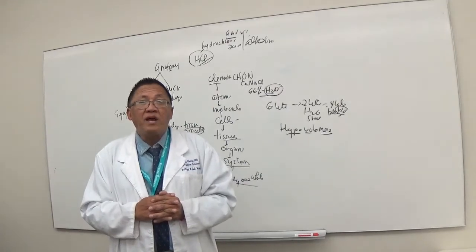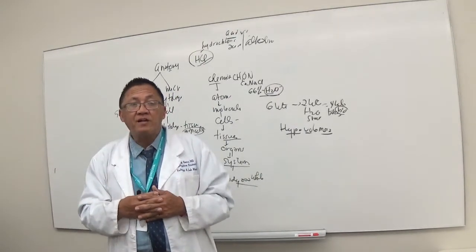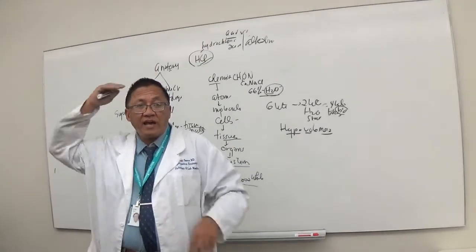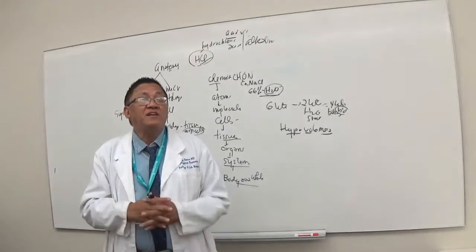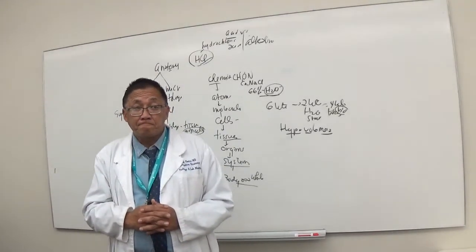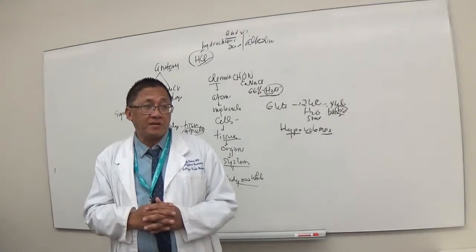Now, let's go to the cavities of the human body. What are the two main cavities? Dorsal and then ventral. Dorsal, you have cranial and spinal. What is found inside the cranial cavity? Brain. What is found inside the spinal cavity? Spinal cord.